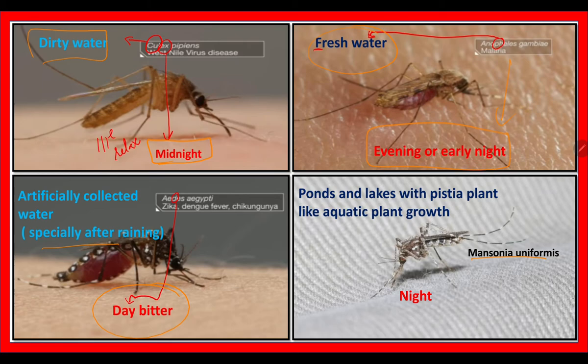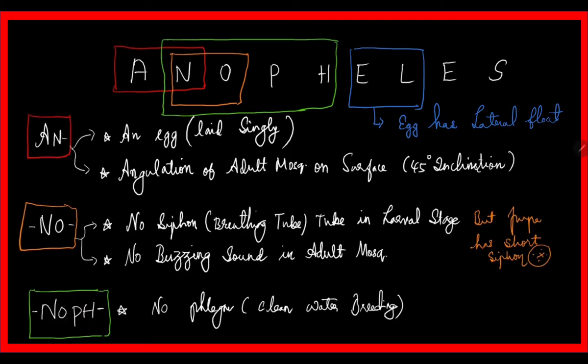Coming to Mansonia uniformis: the larval form of Mansonia sticks to the rootlets of the Pistia plant, so it breeds wherever there are ponds and lakes with Pistia or Hydrilla plants. It usually bites at night. Culex and Mansonia both cause filariasis, and mosquitoes causing filariasis bite at night — so Mansonia and Culex bite at night, especially Culex at midnight.